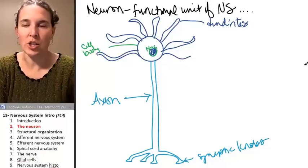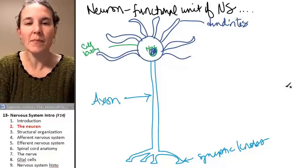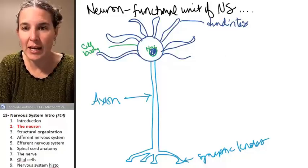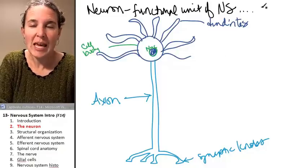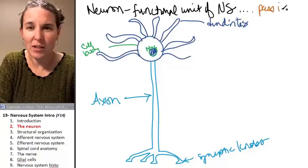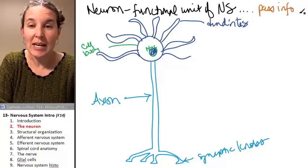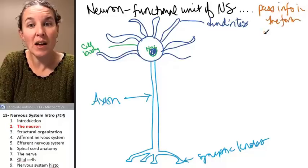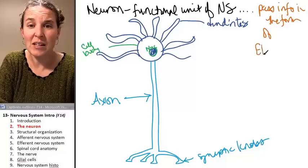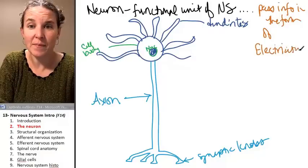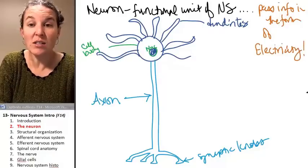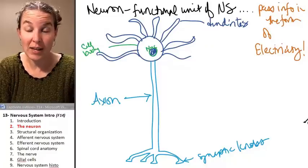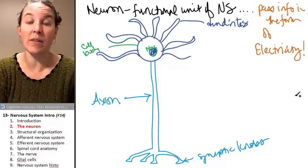And watch and be amazed. Dendrites, the neuron as a whole, is essentially an electric structure. It can pass info in the form of electricity. Neurons are electrical cells. And how they do this is a topic that you will deal with in physiology.